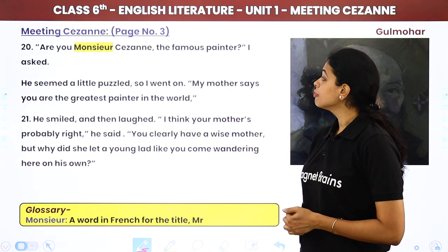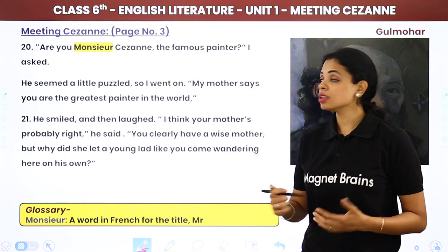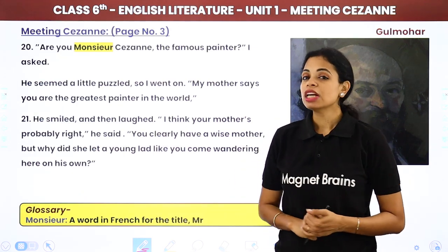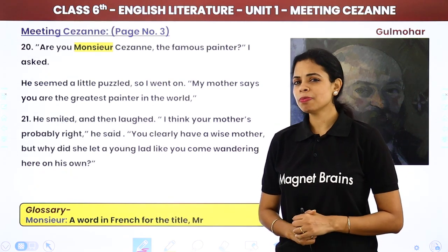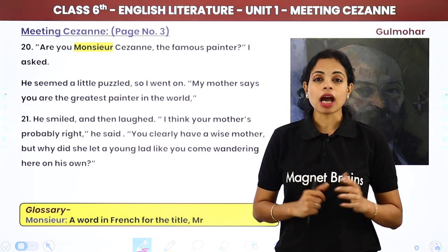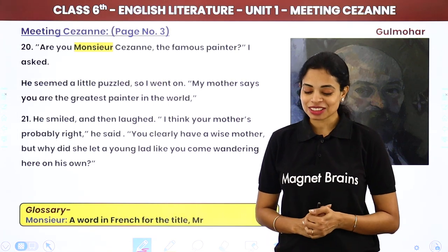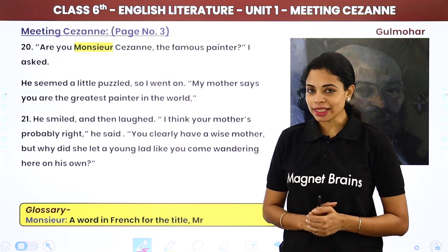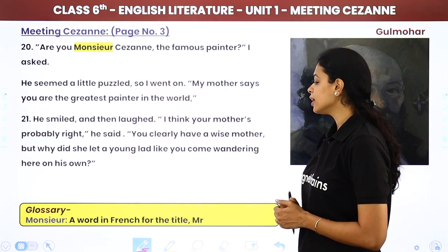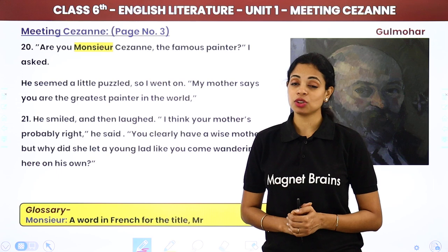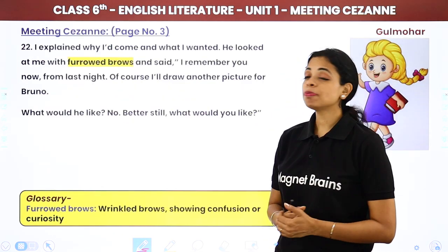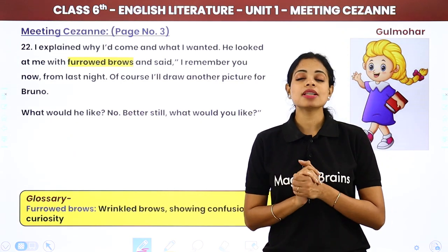Yannick asked, 'Are you Monsieur Cezanne, the famous painter?' — 'Monsieur' being the French word for 'Mr.' The man seemed puzzled, so Yannick added, 'My mother says you are the greatest painter in the world.' The man smiled and laughed, saying, 'I think your mother is probably right — you clearly have a wise mother.' Then he asked why such a young lad had come wandering there alone. Yannick explained everything that had happened.